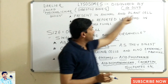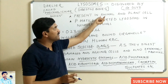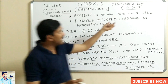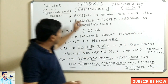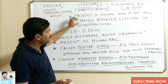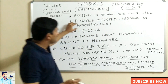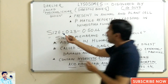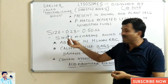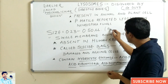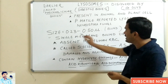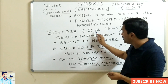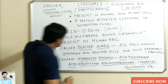Not only are lysosomes found in animal cells, but they are found in plant cells also, though they are more frequently found in animal cells. To justify that they are found in plant cells, a scientist named P. Matil reported the lysosomes in Neurospora fungi.